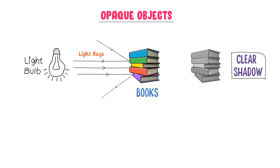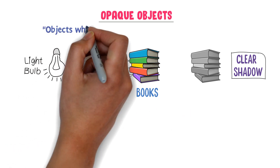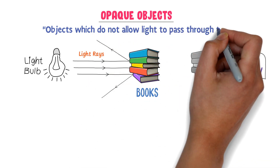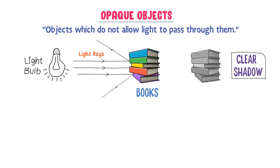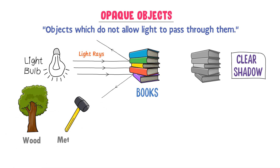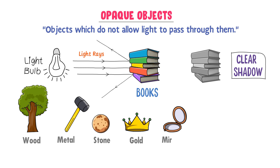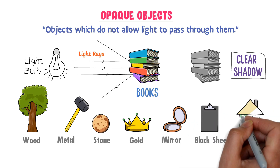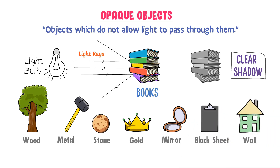Therefore, we define opaque objects as objects that do not allow light to pass through them. For example, wood, metals, stones, gold, mirror, black sheet of paper, wall, etc. are all opaque objects. It is because they do not allow light to pass through them and they form a clear shadow.